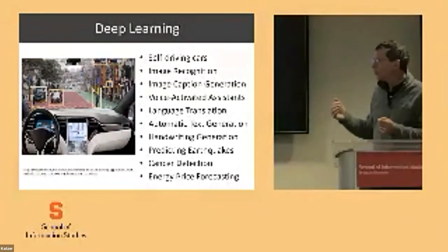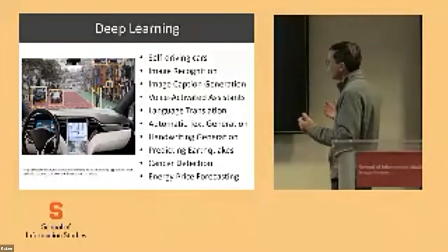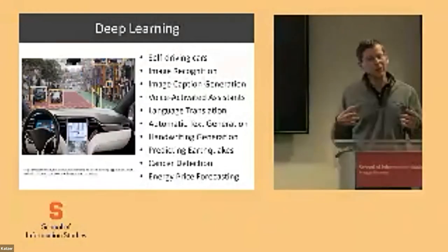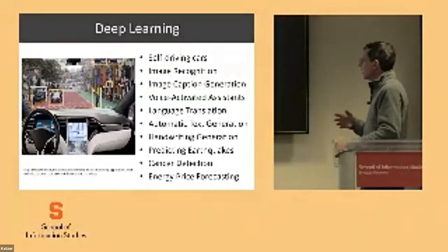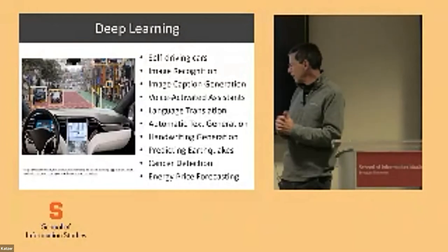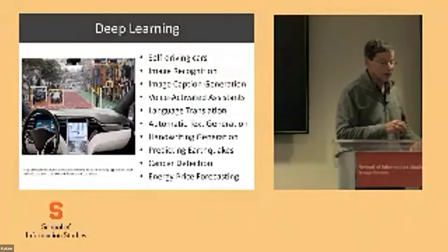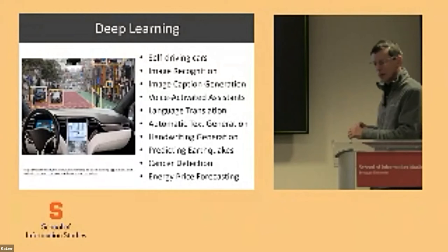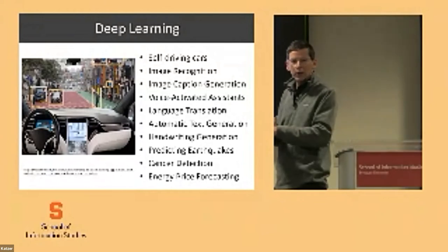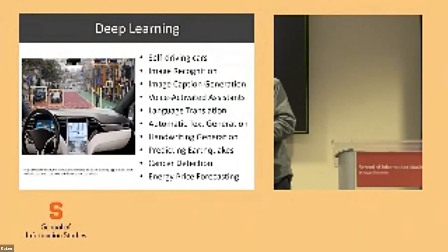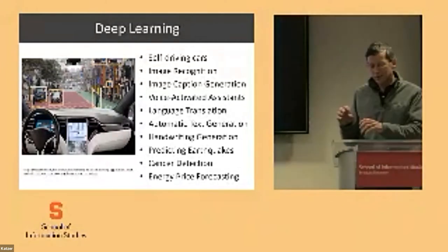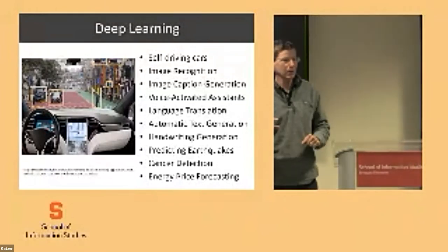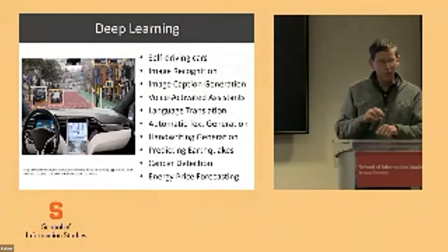Deep learning is not just for driving cars — it can be used in a number of other ways. For example, 'Hey Google' or Alexa is using deep learning to understand what you're talking about. And cancer detection: the machine learning algorithm can look at lots of different examples of blotches on skin and know which ones are cancerous and which ones are not. Today you can use an algorithm that looks at your skin and makes predictions that are as good or better than doctors.